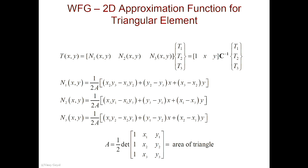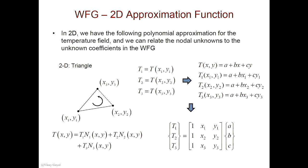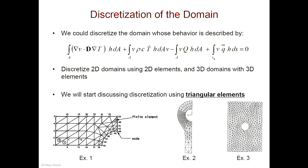Then the next step here is to understand all the properties that come along with these triangles. So if you agree that a temperature field can be represented as T1 times N1 plus T2 times N2 plus T3 times N3 — that's my approximation function. By the way, I just found my basis functions. These N1, N2, and N3 are your basis functions in weak form Galerkin. I just found them.